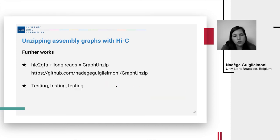So we are doing further works with HiC2GFA to add long reads to it. And as it now includes long reads for phasing, we had to rename it to GraphUnzip. And the tool is now available on GitHub. And we also need to do more testing of this tool to verify that the phasing is correct.